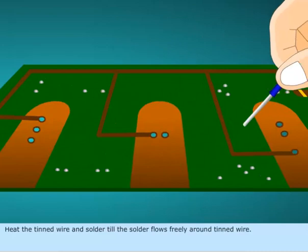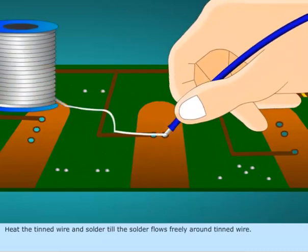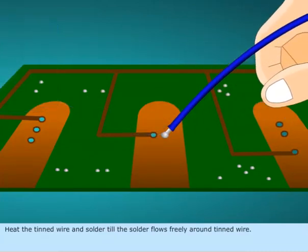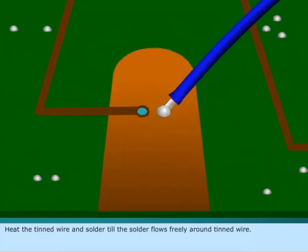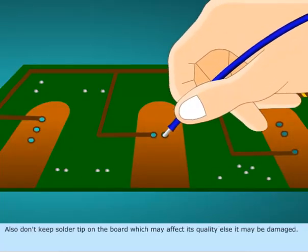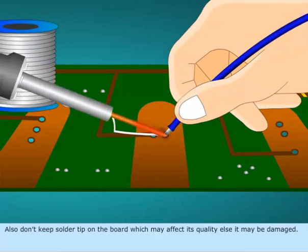Heat the tinned wire and solder till the solder flows freely around the tinned wire. Also don't keep solder tip on the board which may affect its quality or it may be damaged.